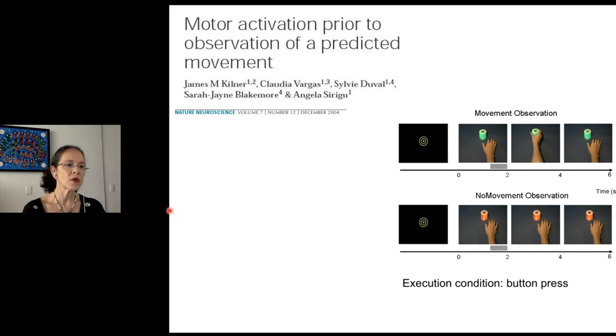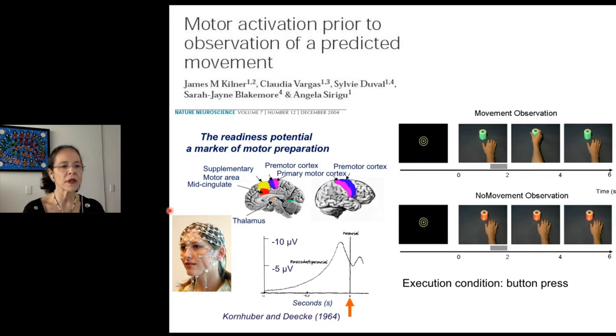Kilner and collaborators were searching for the equivalent of the famous readiness potential activity preceding a voluntary movement, coined by Kornhuber and Dick in 1964. This marker of motor preparation implies in the activation of a dense network of brain regions and occurs in anticipation of a voluntary movement as depicted here in this graph.